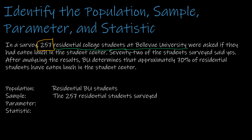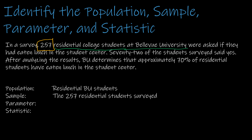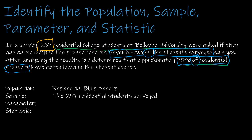As we learn about the population and the sample, we're looking at the parameter and the statistic. We have two values: 72% of the students surveyed and 70% of residential students. I always tell students to look for the word 'of' — it tells you what percentage of what. The parameter goes with all residential students, so that's 70% of residential students. The statistic is specifically about the 257 we talked to, and that's the 72%.